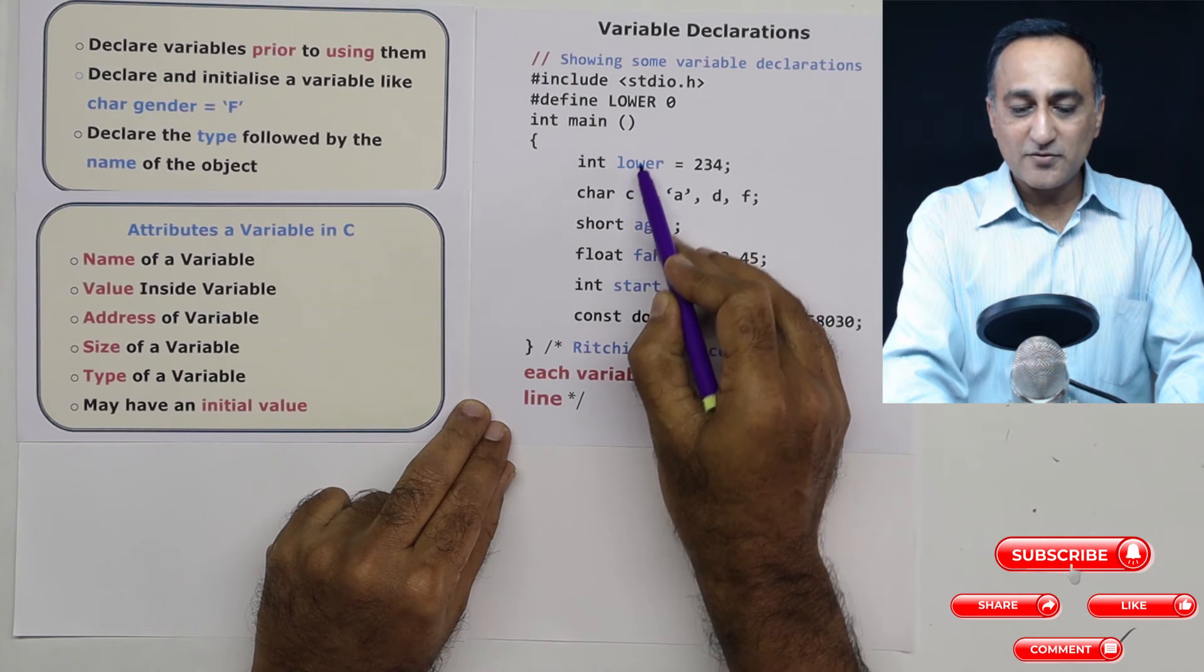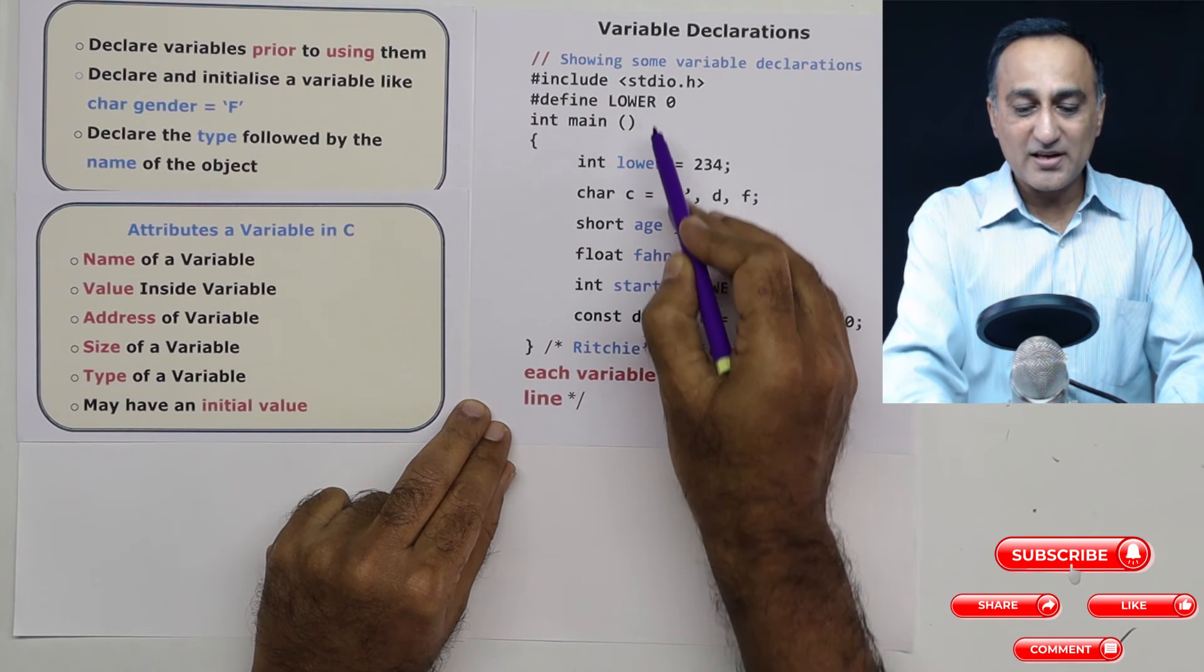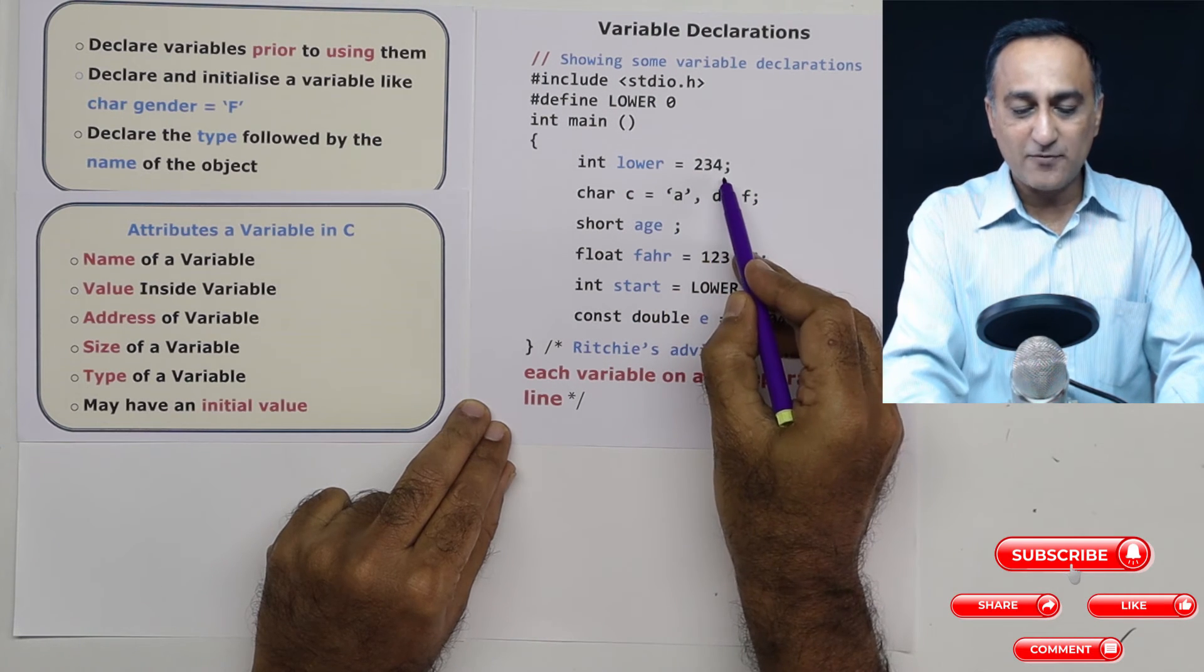Now what I'm doing is I'm declaring a variable int lower with this value, this is different. Now, the case of this is different from this. This is lower case, this is uppercase. So you're perfectly fine. This is 234.